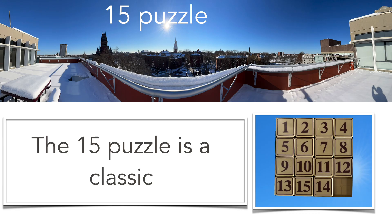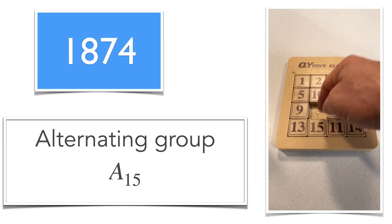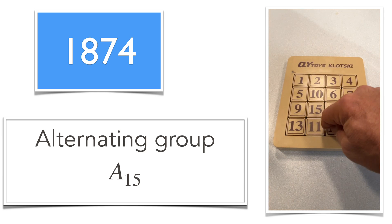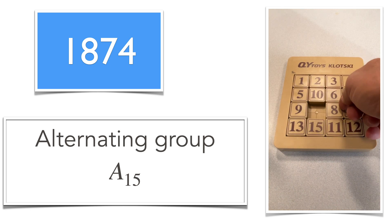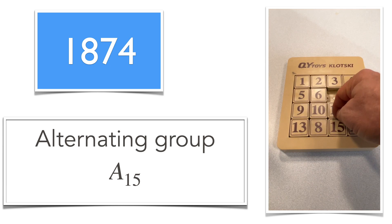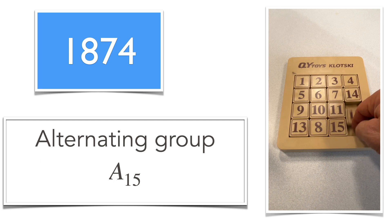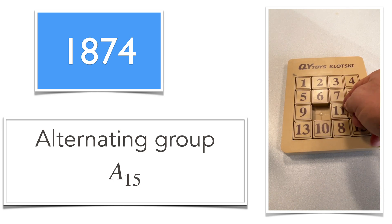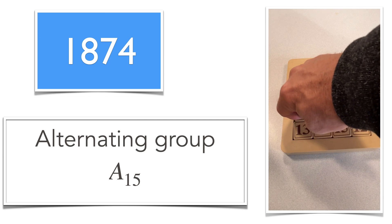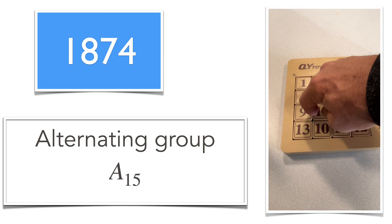The 15 puzzle is definitely the oldest one of the 10. It was also the first puzzle of this kind I've played with. We have to order the pieces, and because not all permutations are possible, this is an alternating group with 15 elements. Each position can be mapped into the situation where the empty field is at the very end, and then one transposition is not possible.